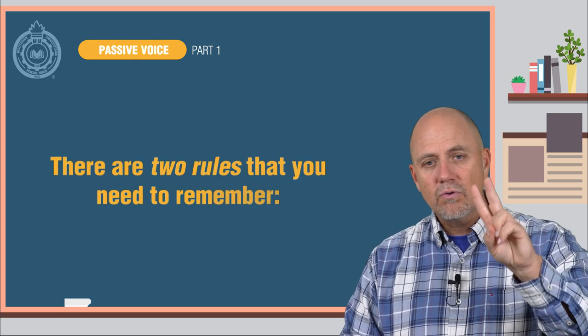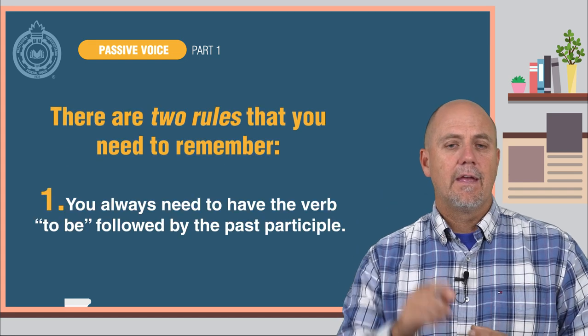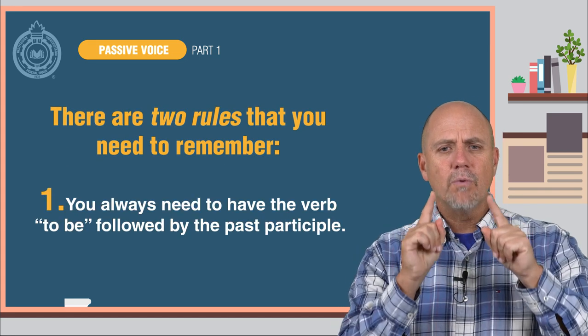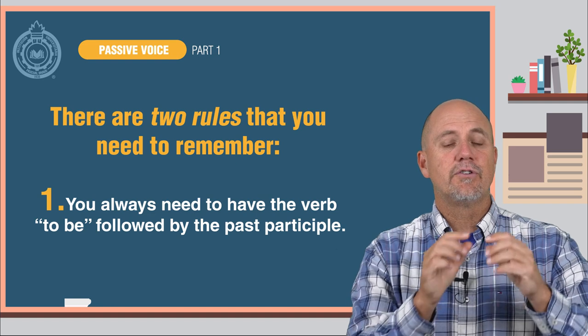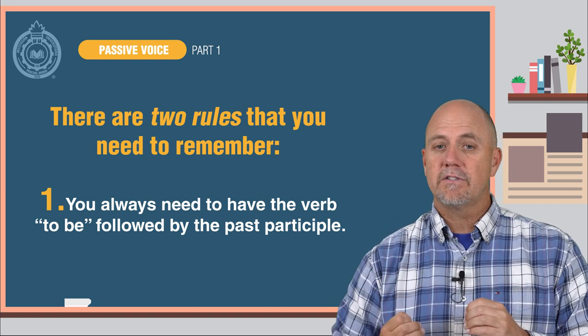There are two rules that you need to remember. Number one, you always need to have the verb to be, followed by the past participle.